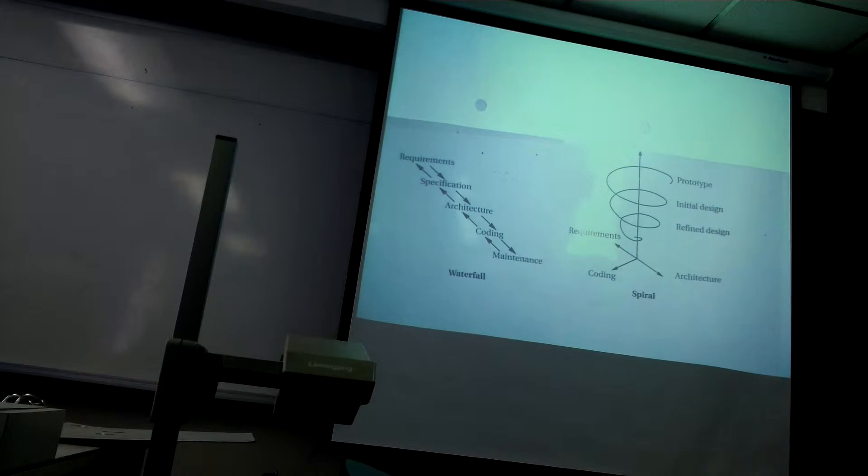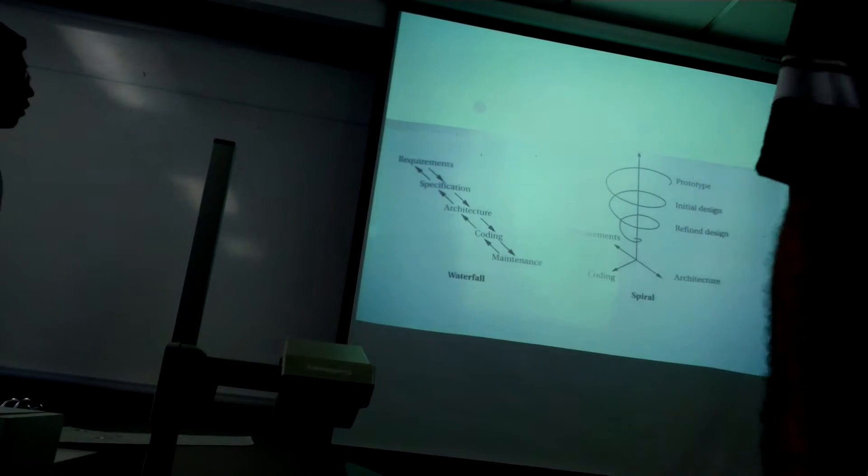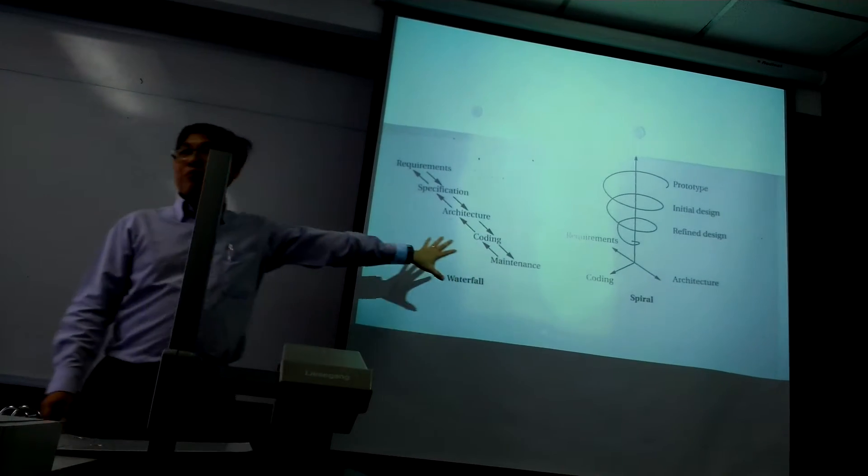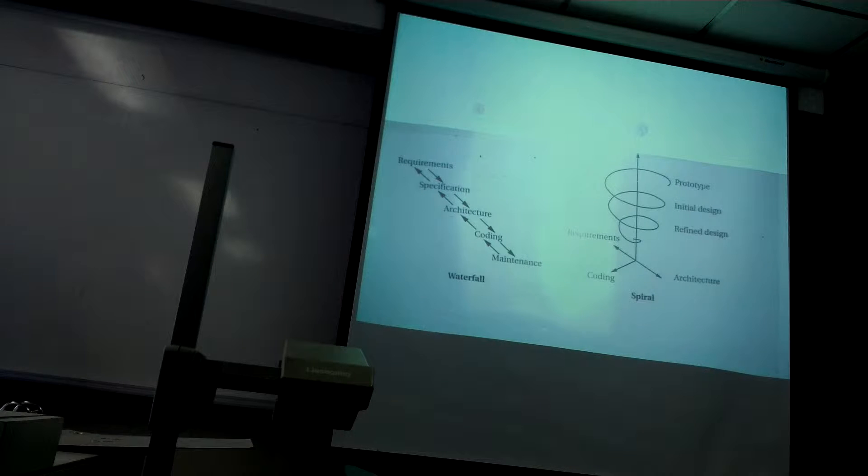So the model that we are looking at here is called the waterfall and spiral. So this is the two software model, development models, that we have been talking in class. And the question is to ask you, why is the spiral development model an improvement over the waterfall model?